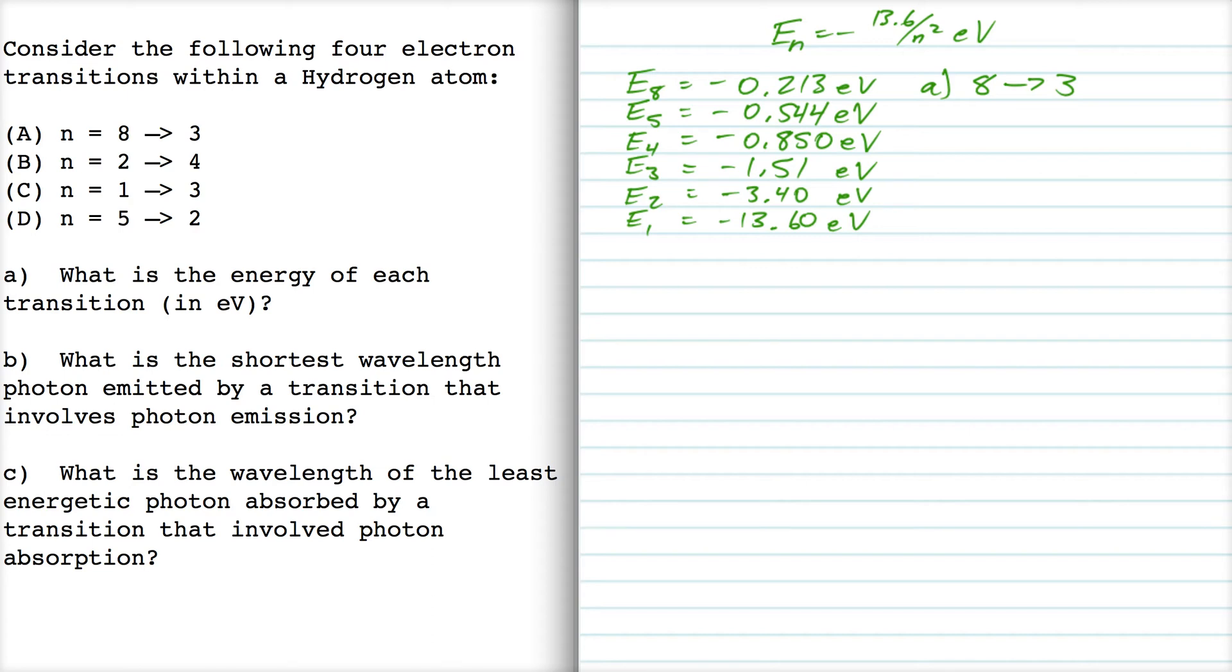That's going to be emission of a photon, right? Because the electron is dropping down to a lower level, so it's going to emit light. The energy difference is going to be E8 minus E3, which is minus 0.213 minus negative 1.51, which is 1.30 eV.